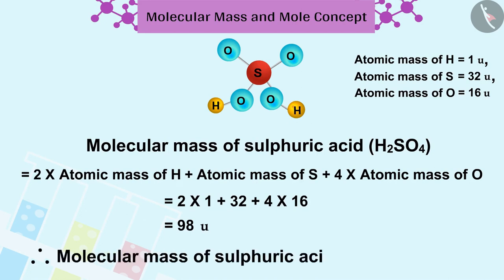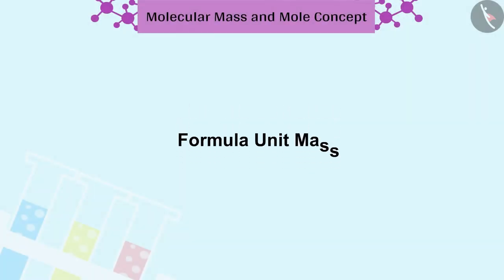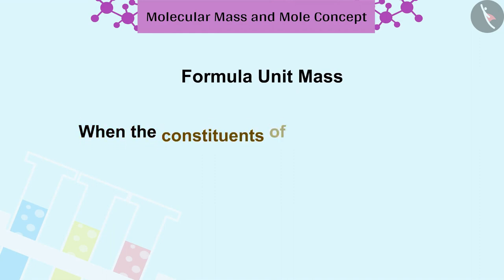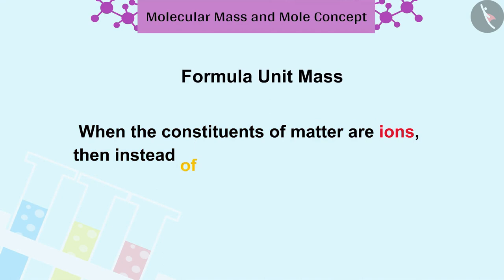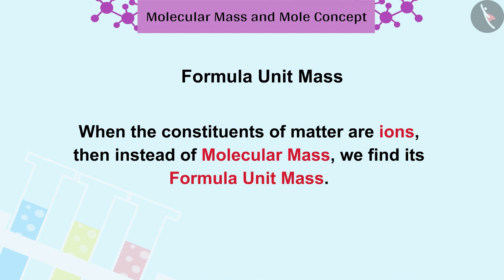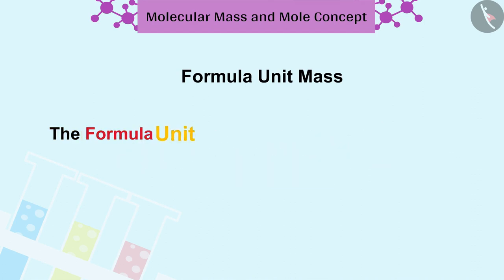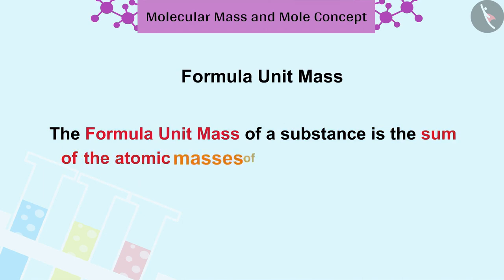When the constituents of matter are ions then instead of molecular mass we find its formula unit mass. The formula unit mass of a substance is the sum of the atomic masses of all its constituent ions.